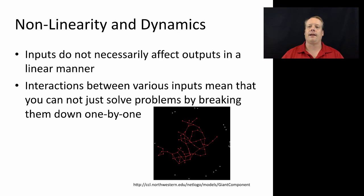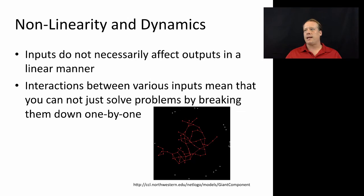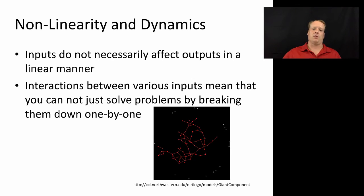Part of the reason why agent-based models feature sensitivity to initial conditions is because of non-linearity within the systems. Non-linearity is the idea that the inputs are not linearly related to the outputs — if I modify one input just a little bit, it doesn't necessarily mean the output changes just a little bit. It can happen in non-linear ways, with big jumps and leaps. The giant component model in the NetLogo models library illustrates this: as you change the number of connections per node by just a little bit, you suddenly see the formation of a giant component within the network, going from detached nodes to one big component containing the vast majority of nodes.